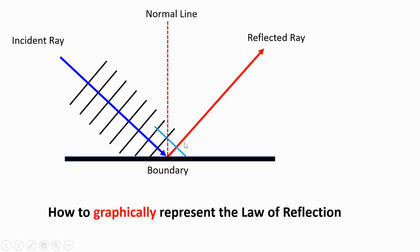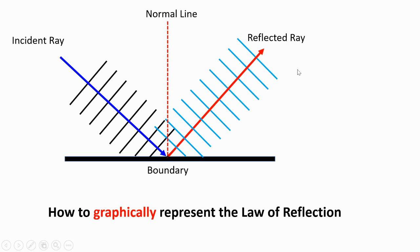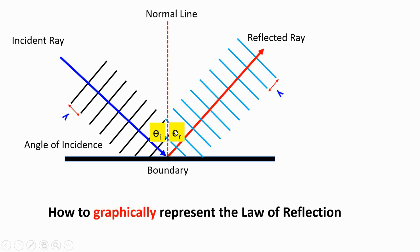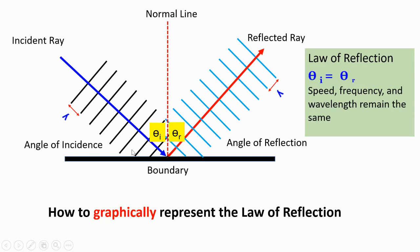The reflected wave front will be perpendicular to the reflected ray. Notice that the wavelength of this wave front is equal to the wavelength of the reflected ray's wave front, so both wavelengths are the same size. This is the angle of incidence and this is the angle of reflection. The law of reflection states that the angle of incidence and angle of reflection are the same.